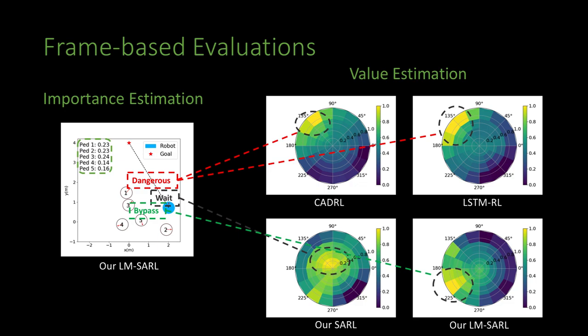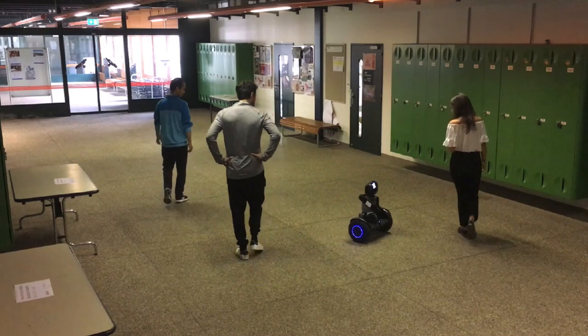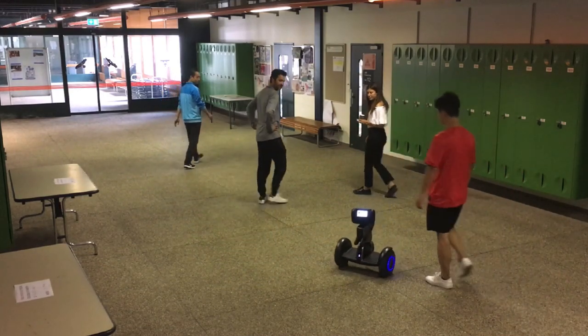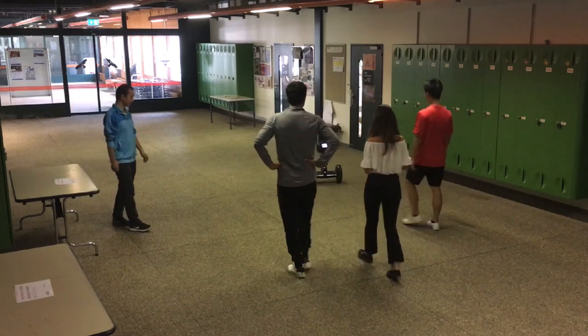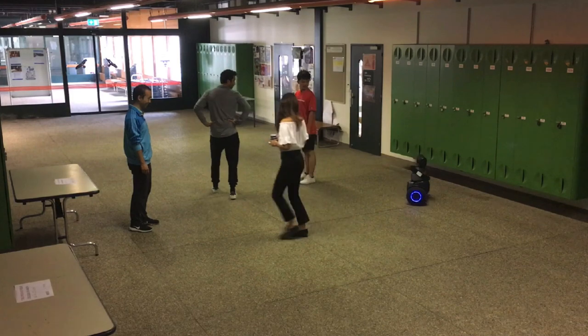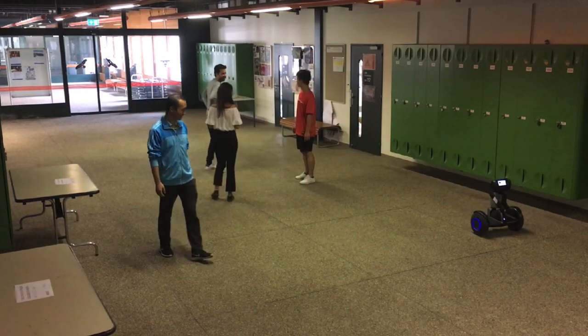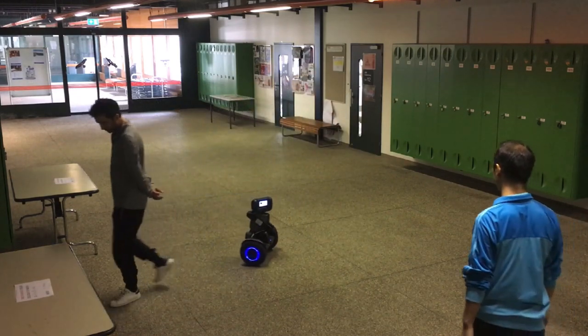Our models also provide good value estimations for the crowded scene. Finally, we test our policy on a Segway robotic platform in real-world environments. The robot detects and tracks multiple pedestrians with on-board cameras and sends the agent-level state information to a remote computer where our policy is deployed. The robot navigates around several humans in the corridor autonomously.